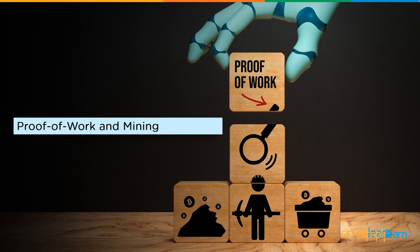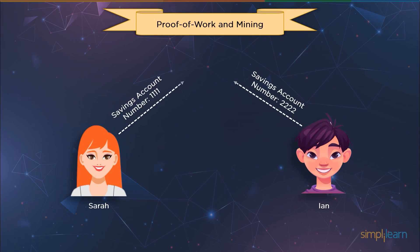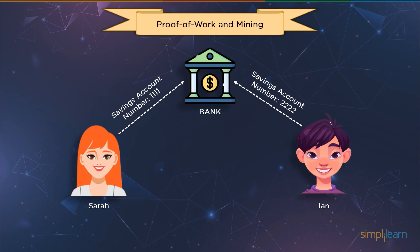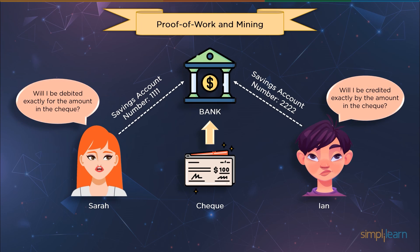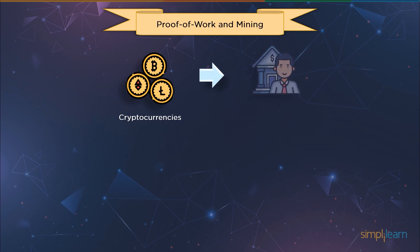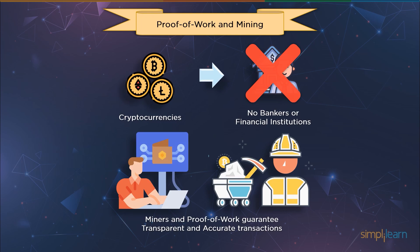Consider there are two friends, Sarah and Ian, who have a conventional bank account in a bank. Sarah was supposed to pay Ian her share of $100 for a party, so she gives him a check for $100. Once the check is deposited in the bank, Sarah wonders if the exact amount in the check will only get debited from her account or if some extra charges will be there. Ian is also wondering if the exact $100 will be credited to his account or if there will be hidden charges. Both parties involved in the transaction must have faith in the bank to transfer money correctly. There are no financial institutions or bankers to guarantee trust in cryptocurrencies; rather, using miners and proof-of-work ensures accurate and transparent transactions.